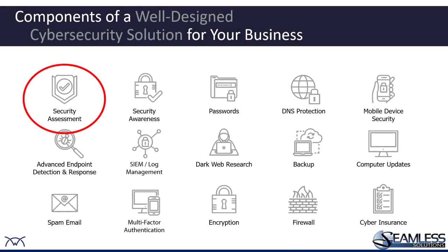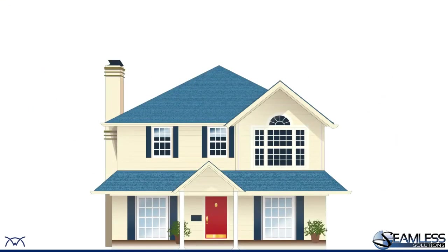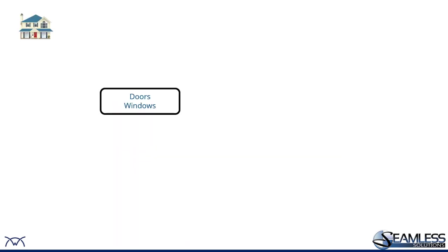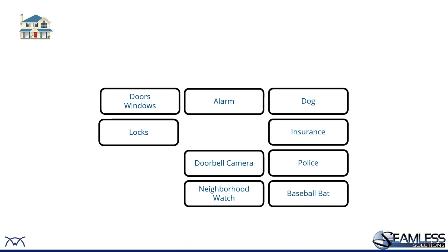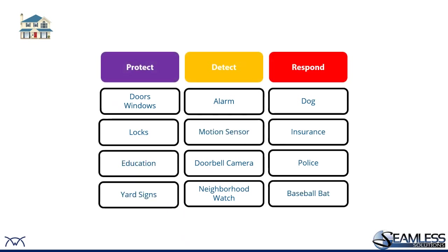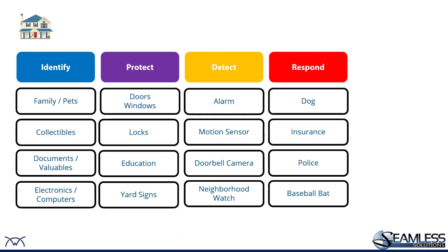For a security assessment analogy, let's use a house. The first step is to identify what you want to protect: your family, your pets, collectibles, grandpa's watch, grandma's jewelry, documents — passports, birth certificates, life insurance — and electronics. Then we protect: doors, windows, locks, education of your kids and spouse, and neighbor awareness. Yard signs are a deterrent control — they deter somebody but that's about all.